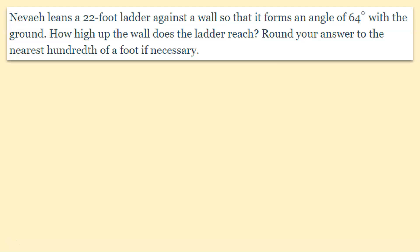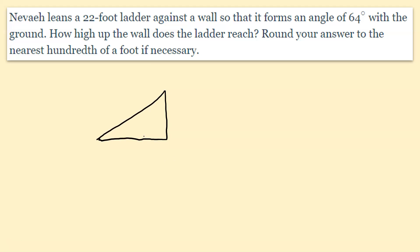First example: Nevaeh leans a 22-foot ladder against a wall so that it forms a 64-degree angle with the ground. How high up the wall does the ladder reach? Round your answer to the nearest hundredth if necessary. So we have our wall, we have the ground, and the ladder leaned on the wall, something like that.